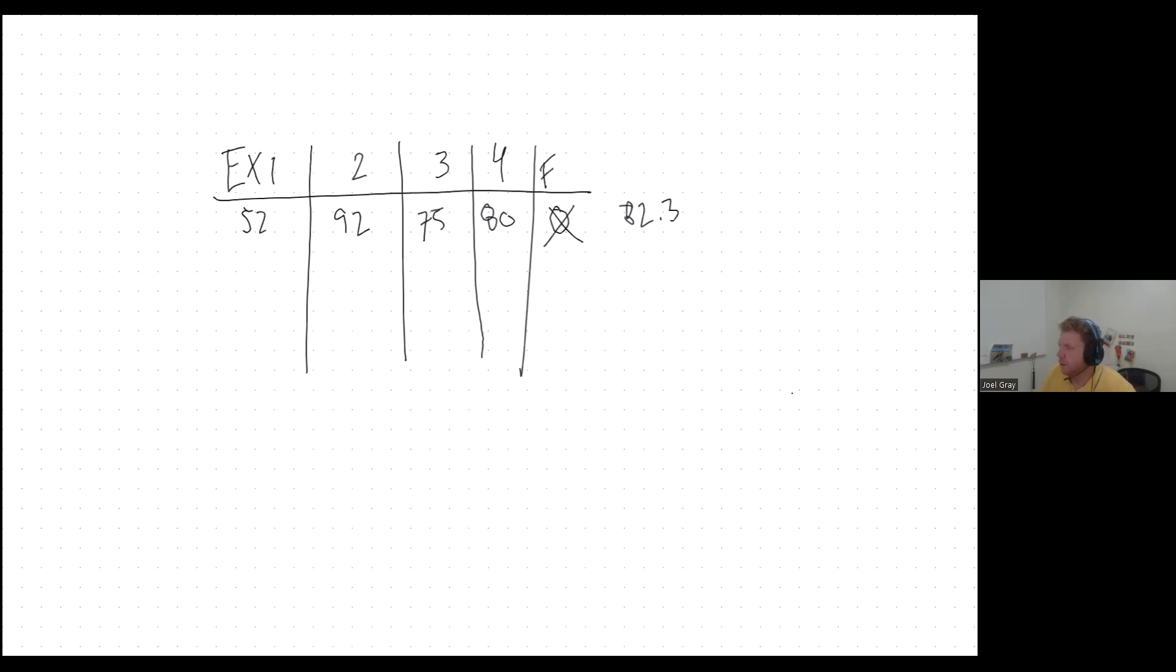Therefore, your grade would end up being, well, 52 plus 92 plus 75 plus 80 divided by 4. In which case your grade would not be a B of 82.3, but instead 74.75.